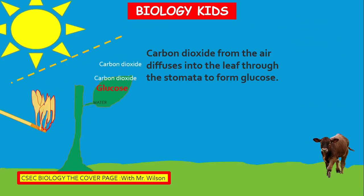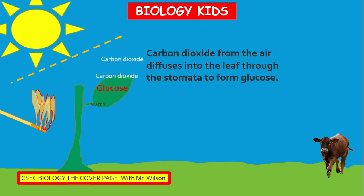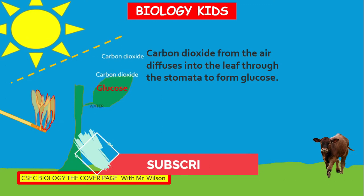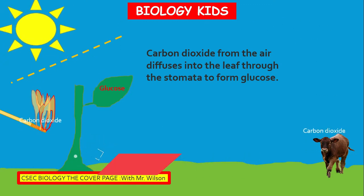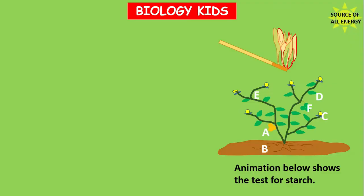Carbon dioxide from the air diffuses into the leaf through the stomata to make glucose. The animal is giving off carbon dioxide, the fire is giving off carbon dioxide, the plant is taking this up — and glucose is being made for you and me.